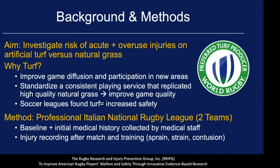For this study, they looked at two professional Italian rugby teams. Medical professionals initially recorded a baseline medical history to capture any ongoing issues. Throughout 300 training sessions and 18 matches in the 2014–2015 season, medical professionals recorded injuries during matches and training. Injuries were defined as a sprain, strain, contusion, or any other injury that took the player out of the game for one or more days.